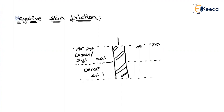Let us assume that you are applying an external load on the pile. As you are applying the external load on the pile, the end bearing resistance qb will be generated, and frictional resistance will also be generated. If there is a loose or soft soil above the dense soil, then as you are applying the load, this soil will try to drag the pile in the downward direction.